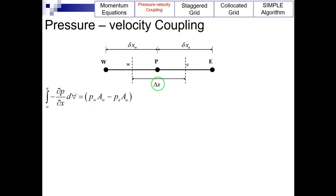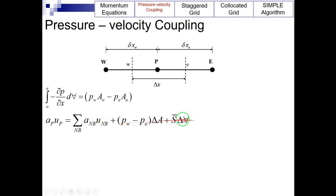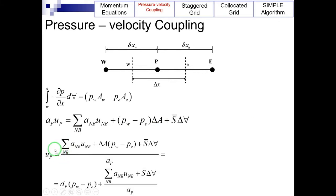We can now write the discretized form of the momentum equation in the x-direction. The last term on the right-hand side shows the source term. From this relationship, we can understand how velocity and pressure are related to each other. In the discretized equation, velocity is related to the pressure gradient by the pressure difference between the two sides of the node. By substituting this relation into the continuity equation, an equation for pressure can be obtained.